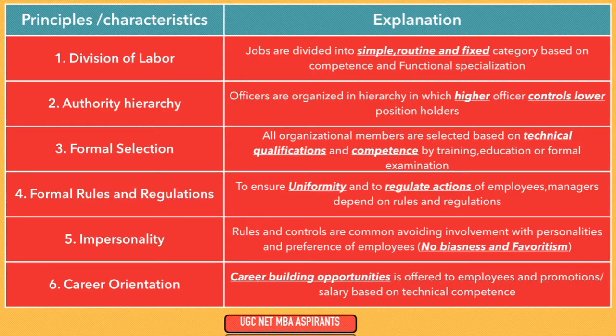Coming to the explanation of each principle. First, division of labor: jobs are divided into simple, routine and fixed categories based on competence and functional specialization. Second, authority hierarchy: officers are organized in a hierarchy where the higher officer controls the lower position holders — the president controls the vice president, vice president controls the supervisor, supervisor controls the workers.